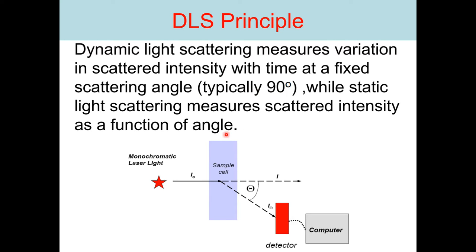This principle is summarized here: we have a monochromatic laser light that is bombarded on the sample cell. The intensity is put on the object, and there is a scattering angle denoted by theta. The scattering intensity is deflected towards the detectors, and the detector sends the information to the computer. Dynamic light scattering measures variations in the scattering intensity.